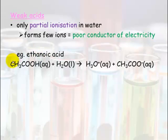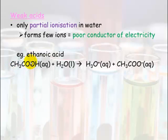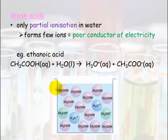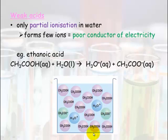Ethanoic acid is an example of a weak acid. You should recognize the COOH group as a carboxyl group. To name it, you see the two carbons giving the 'eth-' prefix, and because of the carboxyl group you give it the '-oic acid' ending — so ethanoic acid. When this goes into water it will only partially ionize. Here you can see most molecules remain as ethanoic acid and only two have ionized — this is what we mean by partially ionized. They are not willing to give up that hydrogen very easily.